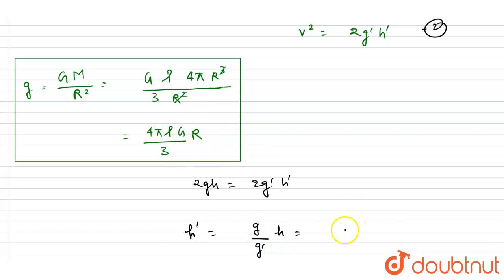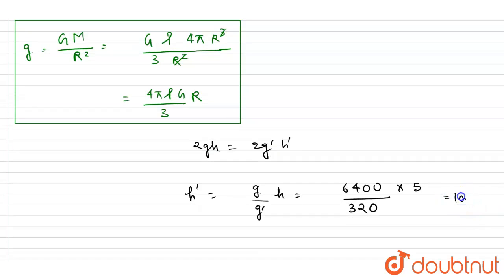g is proportional to the radius of the planet. The earth has a radius of 6400, the planet has a radius of 320, and the height up to which it is jumping on the earth is 5. So we get the height up to which it will jump on the planet is 100 meter. This is the answer of the question.